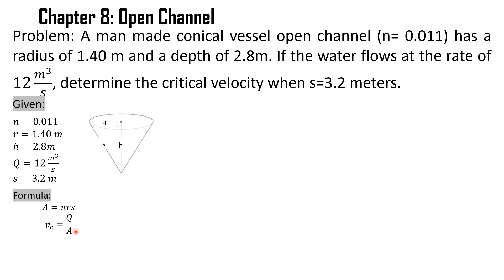We're going to find first the value of area. The formula for the area of the conical vessel is πrs, where the radius equals 1.4 meters times 3.2 meters.